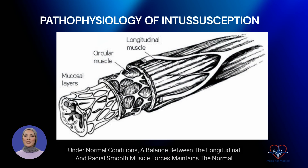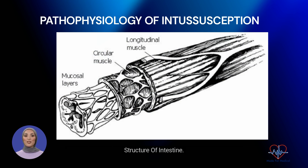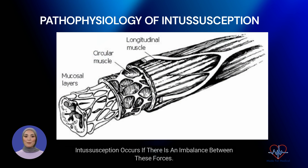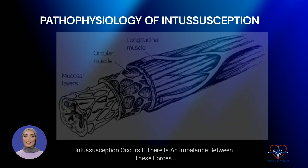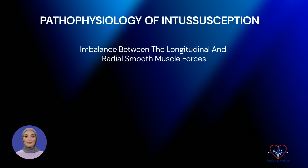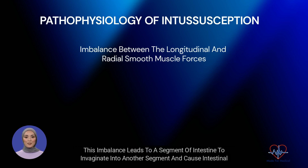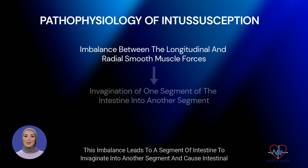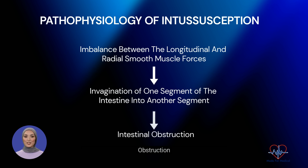Under normal conditions, a balance between the longitudinal and radial smooth muscle forces maintains the normal structure of the intestine. Intussusception occurs if there is an imbalance between these forces. This imbalance leads a segment of intestine to invaginate into another segment and cause intestinal obstruction.